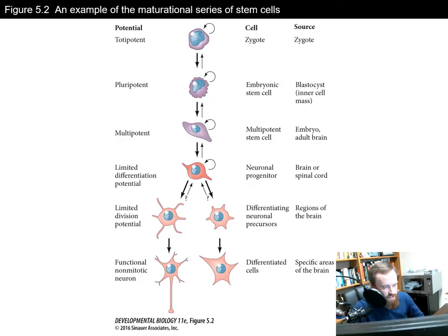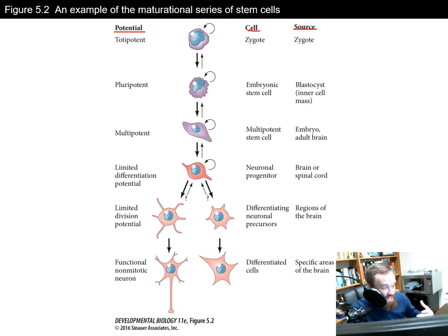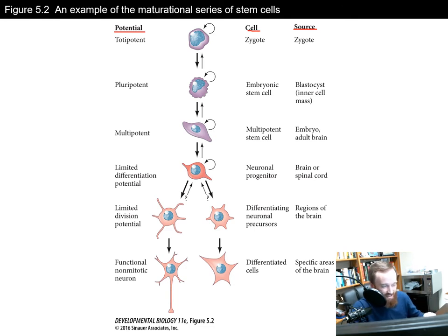Let's talk about the different potentials of cells — the potential, cell type, and their source. First, we have totipotent. Totipotent cells are capable of producing all cell types of lineages, including the fertilized egg and the first 48 cells. They can form embryonic cells, but on top of that they can also form the extra-embryonic cells like the placenta and the yolk sac, things surrounding the embryo.